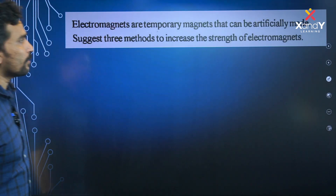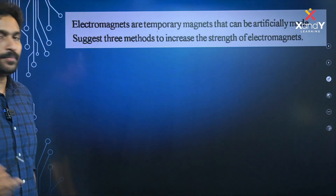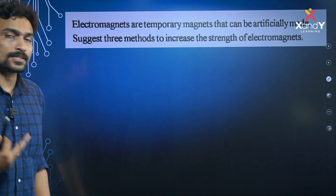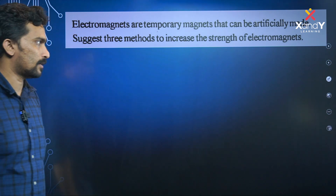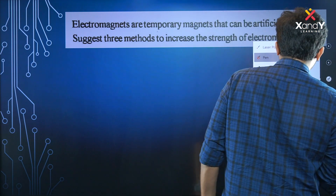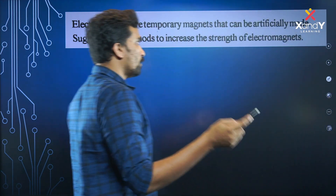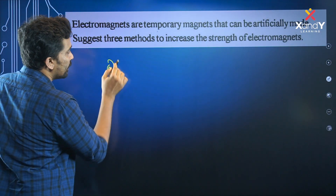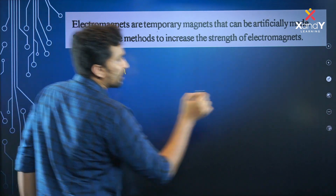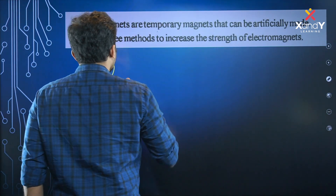Electromagnets are temporary magnets that can be artificially made. Suggest three methods to increase the strength of the electromagnet. The strength of the electromagnet depends on the current. I have two methods — one is using the current. Increase the strength of current. Current is the strength of the current.